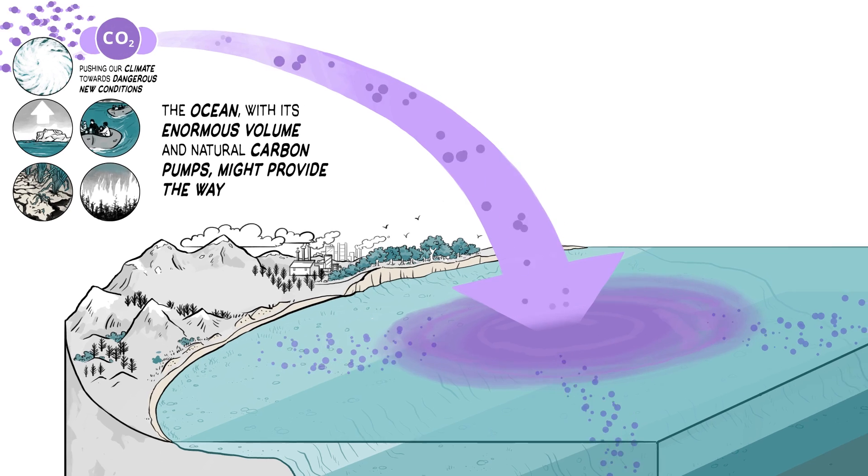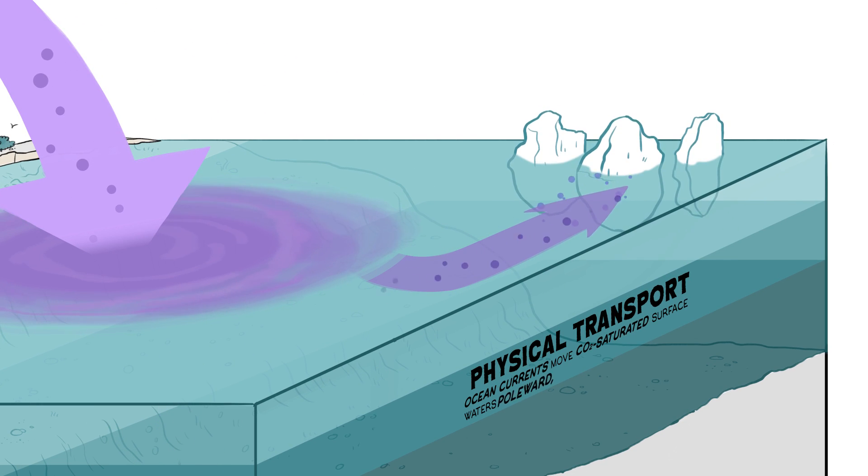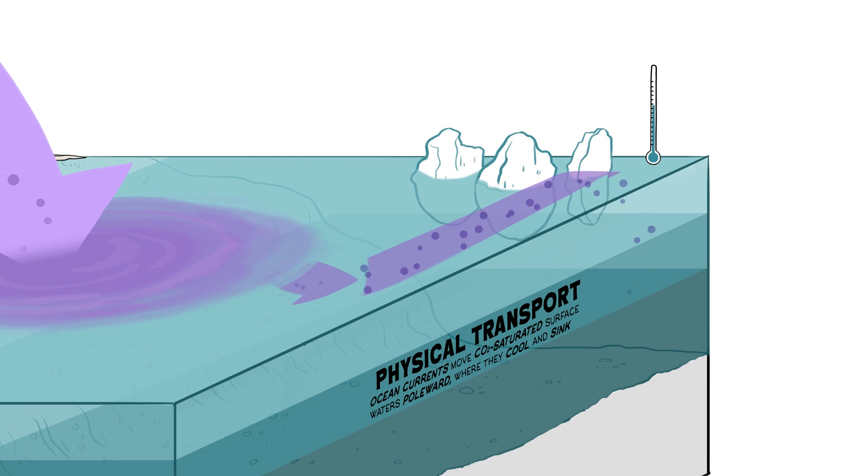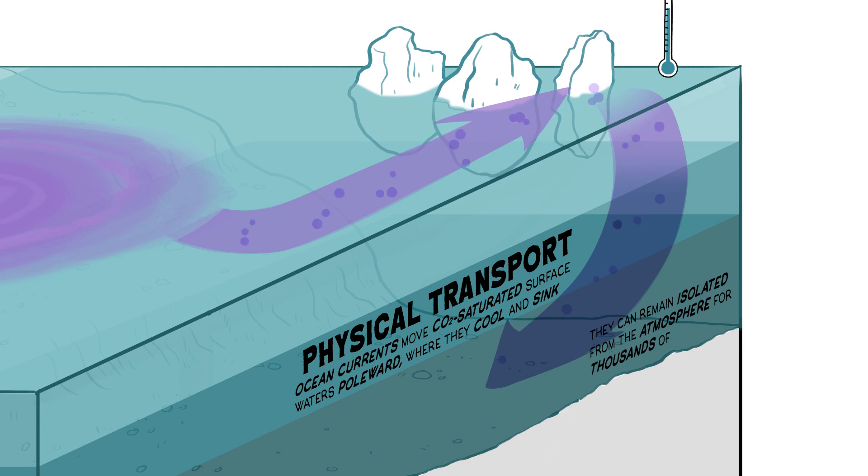Ocean currents move CO2-saturated surface waters poleward, where they cool and sink, pulling our emissions into the deep ocean, where they can remain isolated for thousands of years.